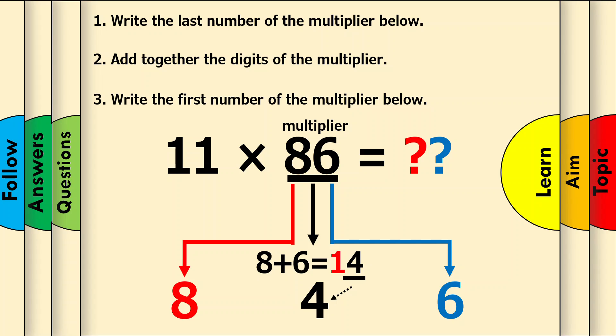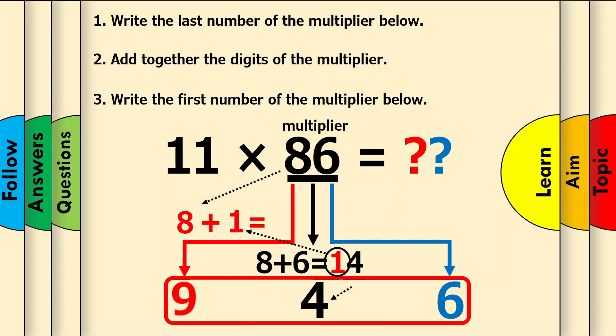Now remember that we still have to do something with our extra 1. So move the 8 back up and add it with the extra 1 to make 9. Finally, write this below to get the final answer of 946.